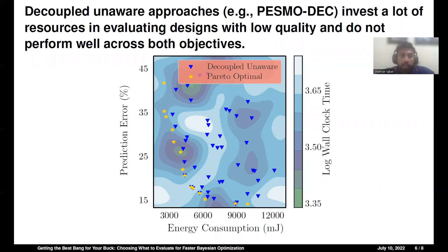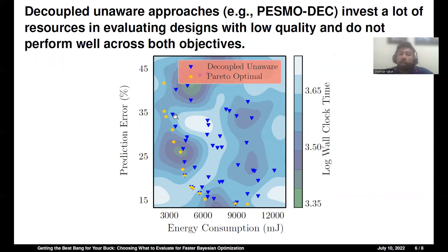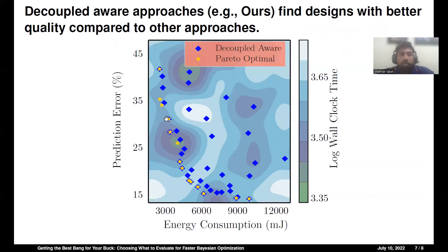Decoupled unaware approaches invest a lot of resources in evaluating designs with lower quality. They have invested a lot of resources with higher evaluation costs, but these designs do not have low prediction error and low energy consumption — it has done well across prediction error but has not done well on energy consumption. Whereas decoupled aware approaches like ours find designs with better quality, and we have saved a lot of resources by evaluating the costly objective only when the information gain was higher, like when the quality was higher.